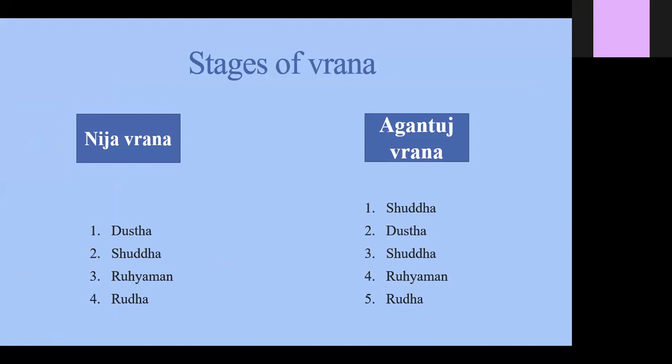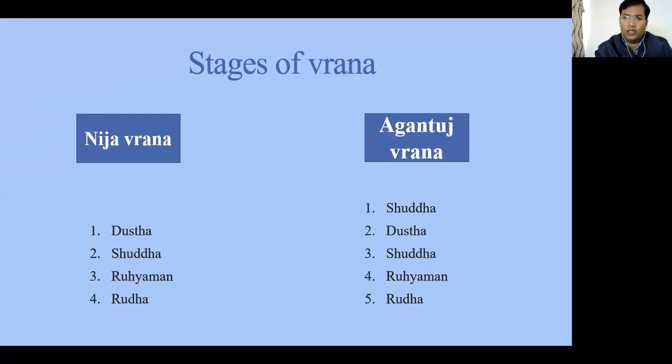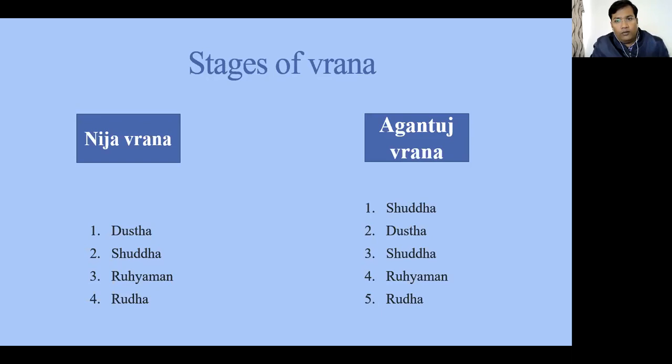We already discussed there are four basic stages: Dushta-Vrana, Shuddha-Vrana, Rohimana-Vrana, and Rudra-Vrana. Dushta-Vrana means completely infected or contaminated wounds, Shuddha-Vrana means the clean wound, Rohimana-Vrana means the healing wound, and Rudra-Vrana means the healed wound. We will discuss one by one the characteristic features of each of these stages as per our Ayurvedic classics.